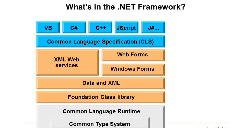You might have a team within your company doing Visual Basic and another team doing C#, and those applications might integrate and exchange messages. Because every .NET language uses the same type system, you don't run into rounding issues and other problems that typically come up when you exchange data between applications. It's very smooth regardless of the language you're using in .NET.